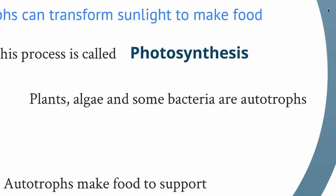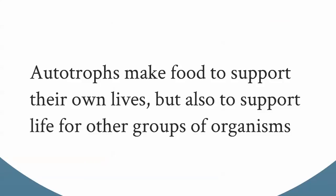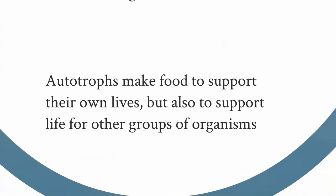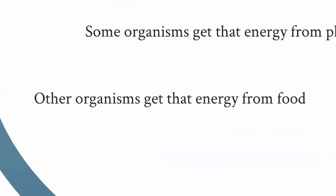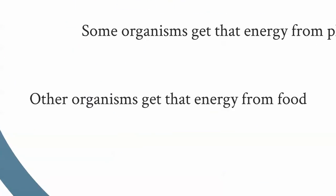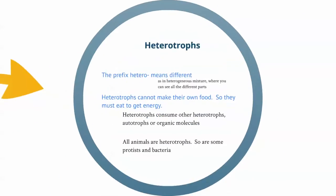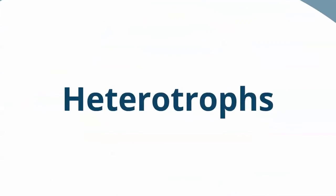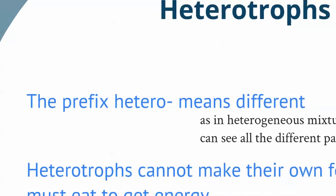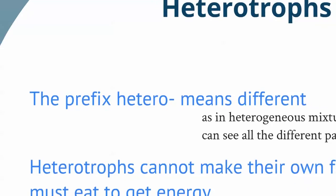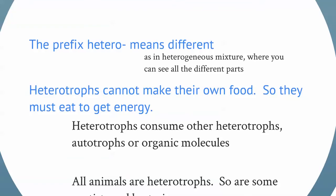Plants, algae, and some bacteria are autotrophs. Autotrophs make food to support their own lives, but also to support life for other groups of organisms. Those other organisms get energy from food and are called heterotrophs. You should already know that the prefix hetero means different, like heterogeneous mixture.